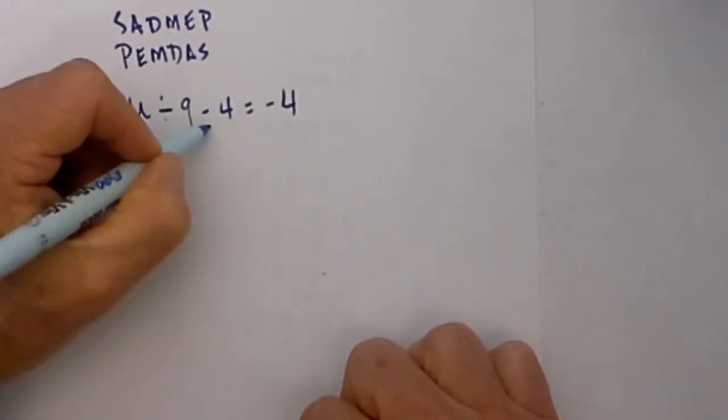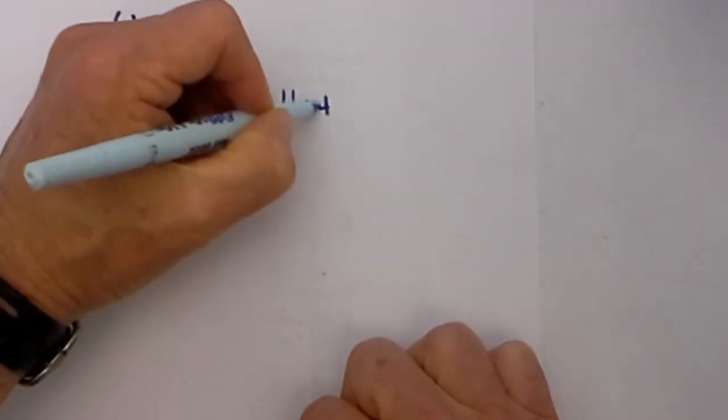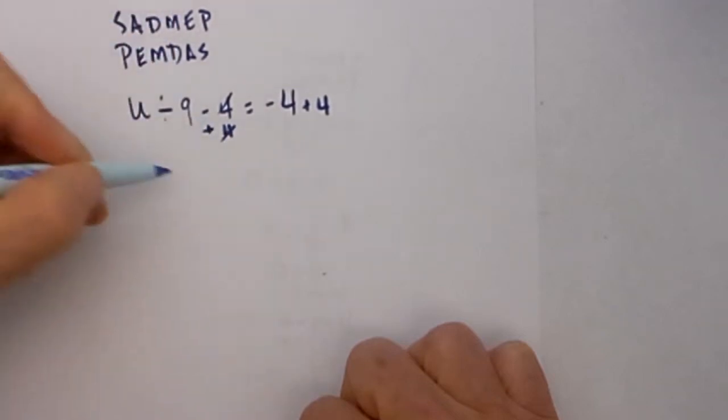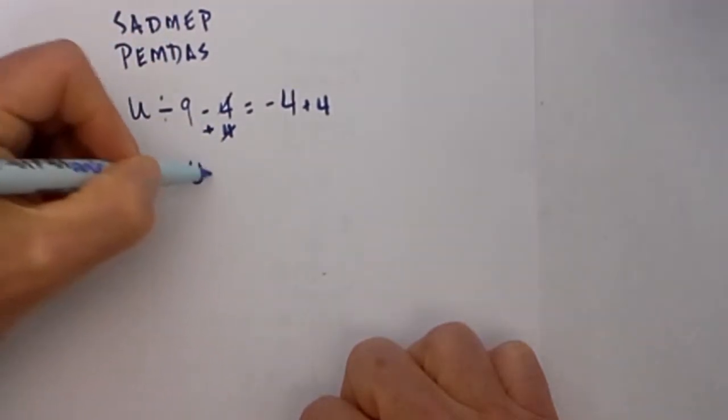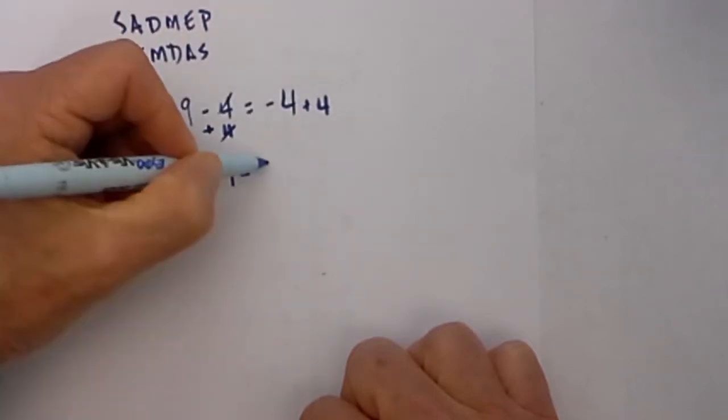I have subtraction here, so in order to undo the subtraction, I do the opposite of subtraction which is addition. These two will cancel, so I am left with u divided by 9 is equal to minus 4 plus 4, which is 0.